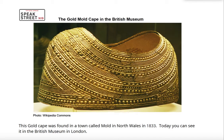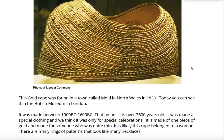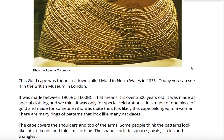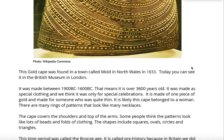The Gold Mould Cape in the British Museum. This gold cape was found in a town called Mould in North Wales in 1833. Today you can see it in the British Museum in London. It was made between 1900 BC to 1600 BC. That means it is over 3600 years old. It was made as special clothing and we think it was only for special celebrations.